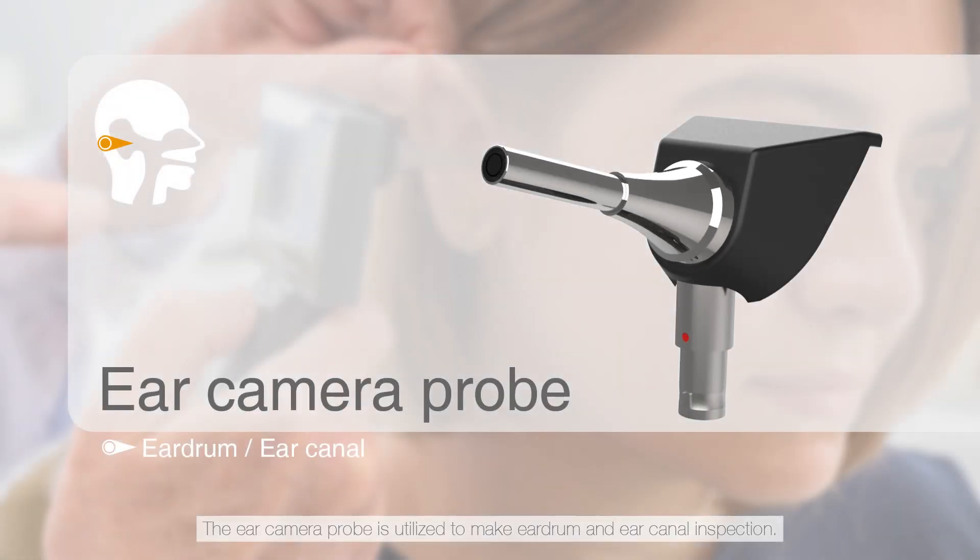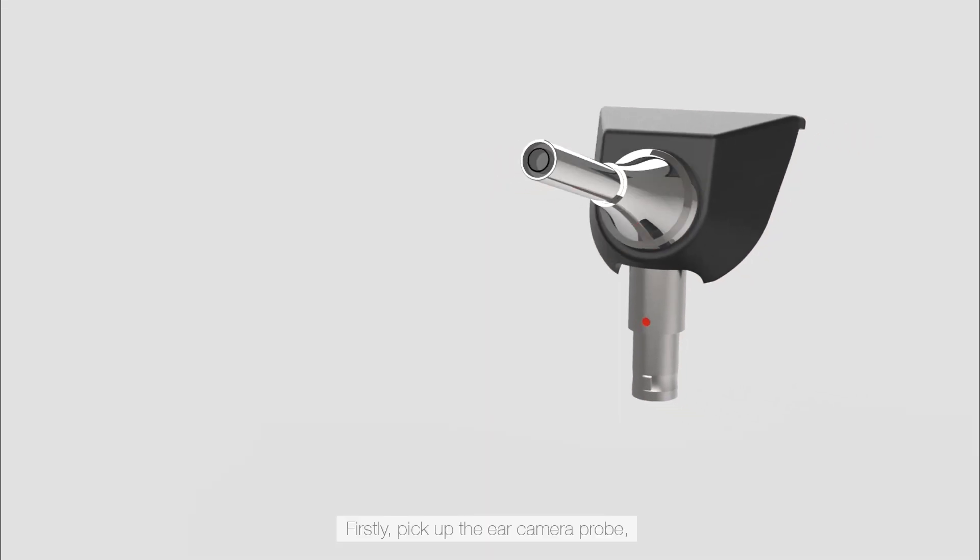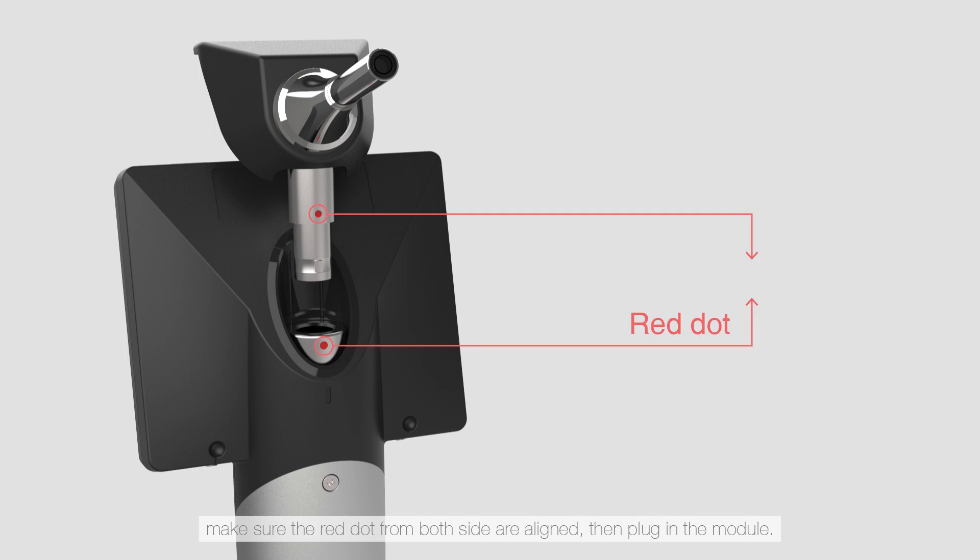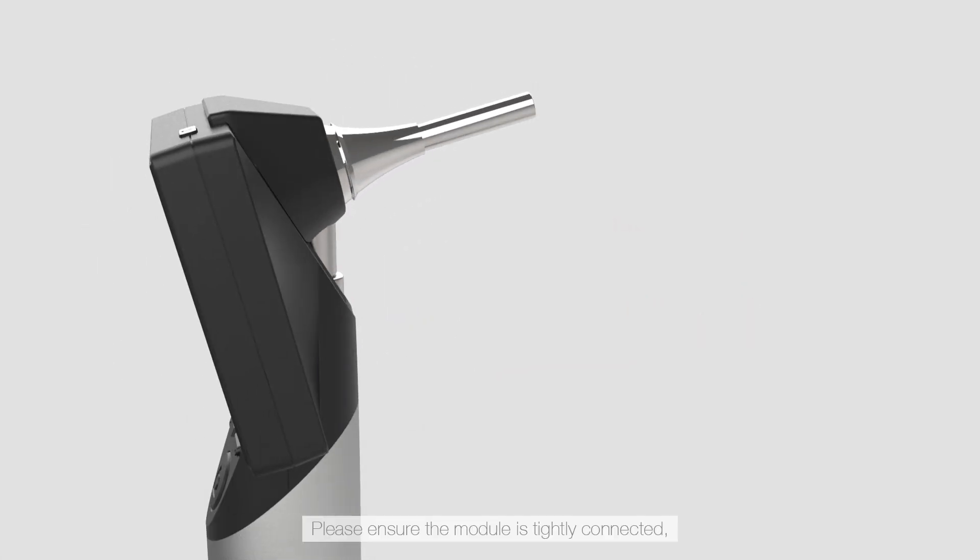The ear camera probe is utilized to make eardrum and ear canal inspection. Firstly, pick up the ear camera probe, make sure the red dot from both sides are aligned, then plug in the module. Please ensure the module is tightly connected, leave no gap between the module and main device.